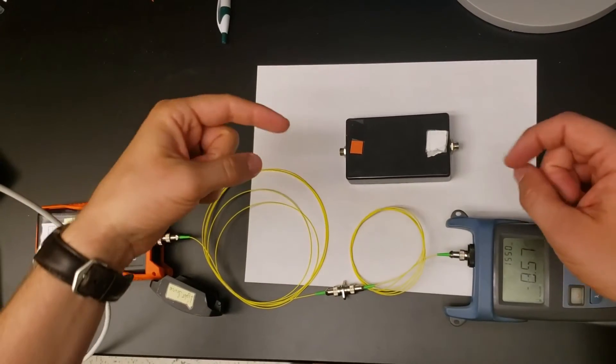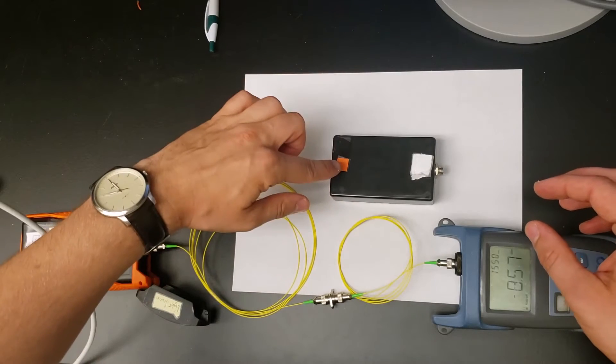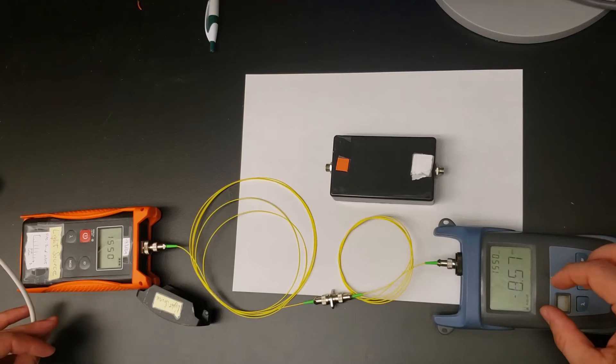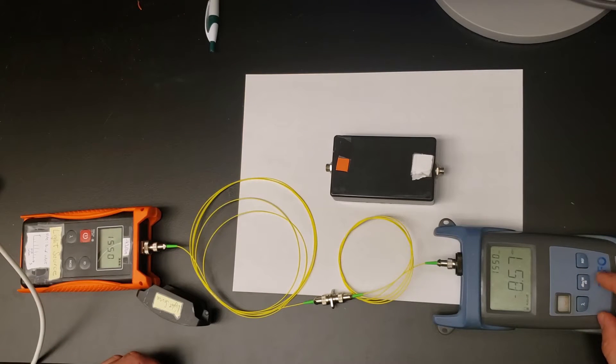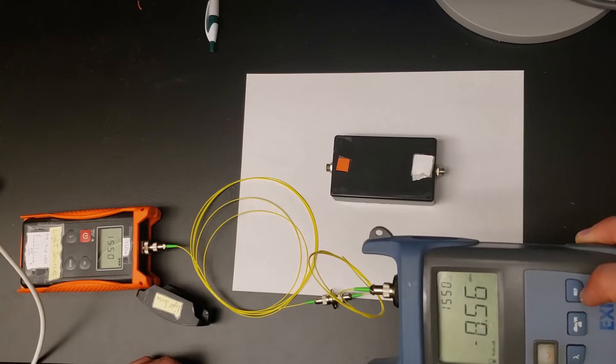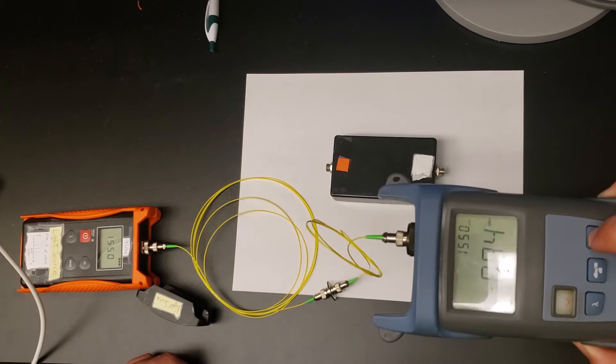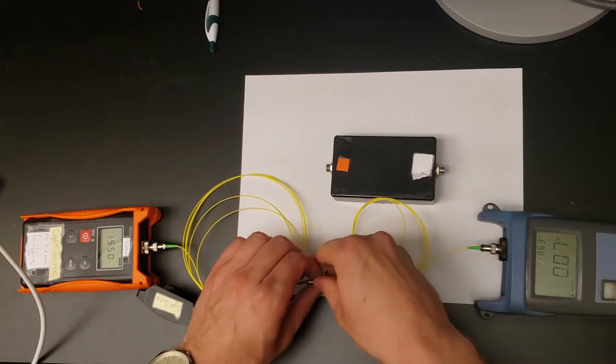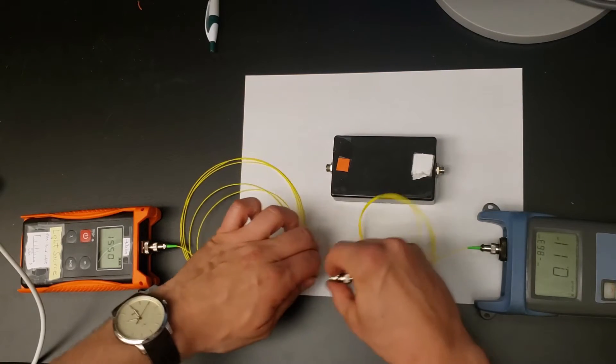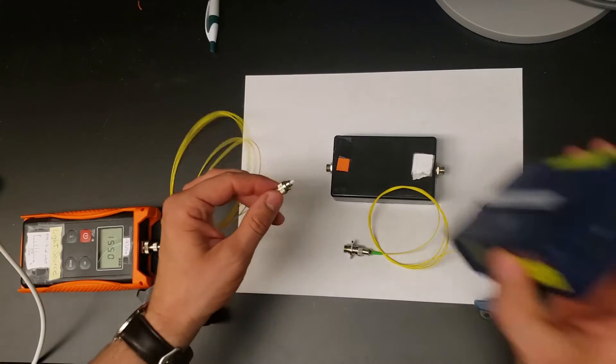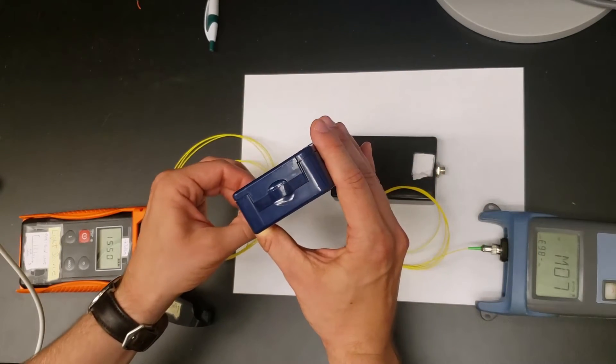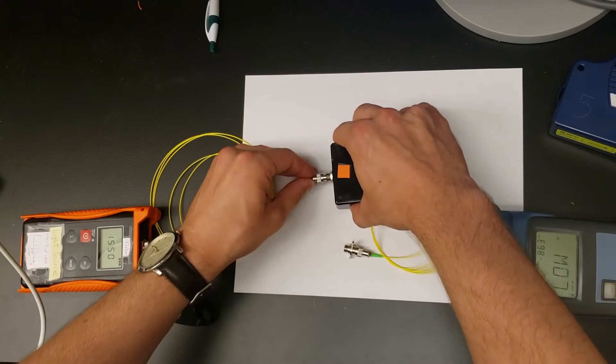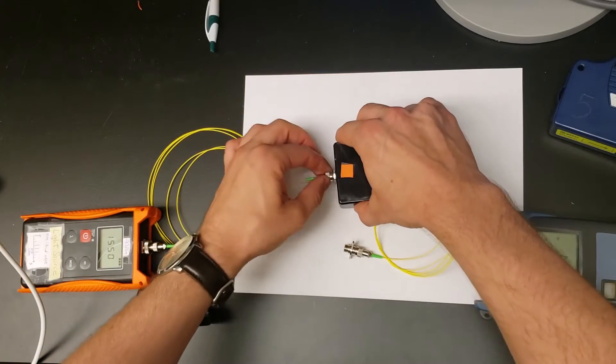Here we have another mystery device with two ports labeled orange and white. We also have a handheld laser and power meter. First I'm going to push this REF button which should normalize everything to the power coming in. Now I'll disconnect here and plug into the orange port, making sure I also clean it.